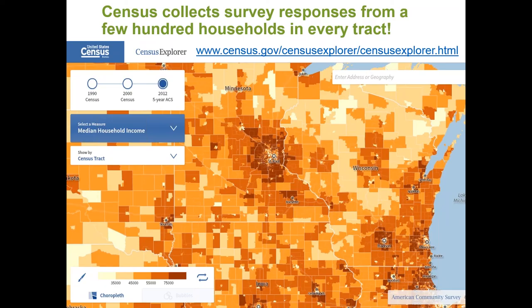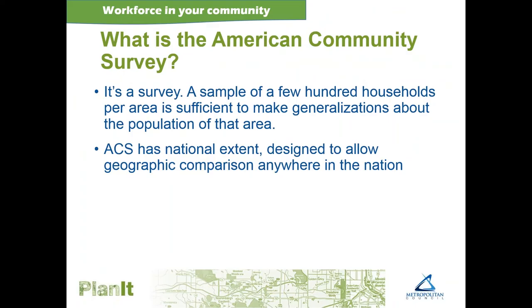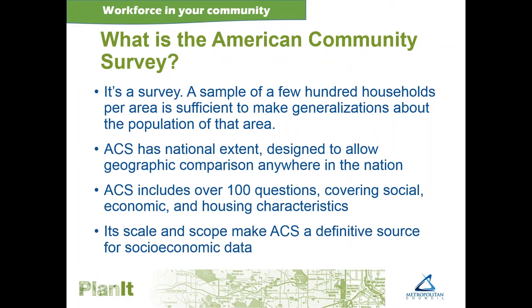This is an illustration of just how deep and comprehensive this data is. The Census collects survey responses from a few hundred households in every census tract. On this map, every little polygon you see is a census tract, and we have data for all of those for the entire state and the entire country. The American Community Survey has over a hundred questions and it covers demographic, social, economic, and housing characteristics. The comprehensive nature of these socioeconomic questions and the scale and scope of ACS make it a very useful source for socioeconomic data research — knowing about the households, housing, and population in your community.